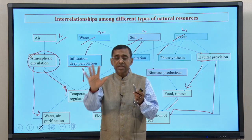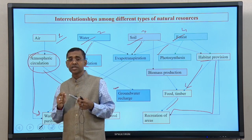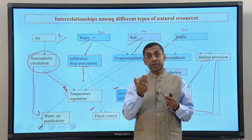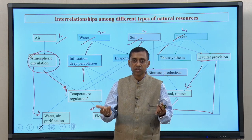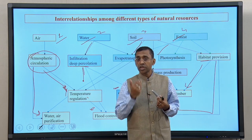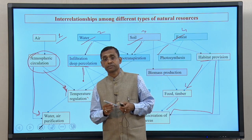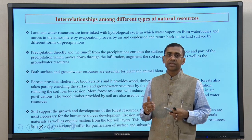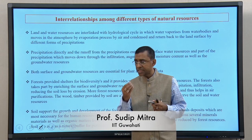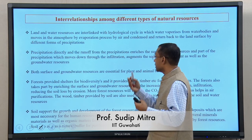In the natural resource management paradigm, it is important for us to understand that a compartmental approach will not work or provide the desired outcome we expect from natural resources — that is, making our life sustainable. We need to take care of the natural resources available around us in a very integrated manner. These interrelationships among different types of natural resources are actually key for our sustainable livelihood and the survival of mankind.